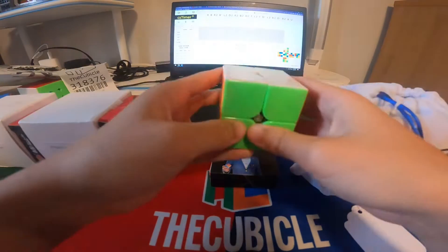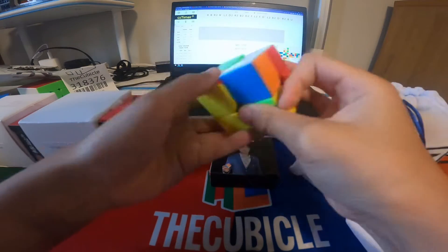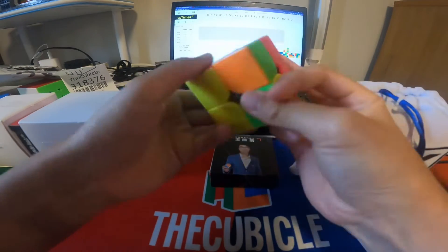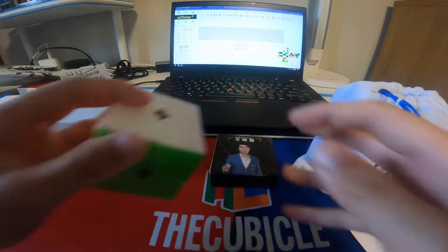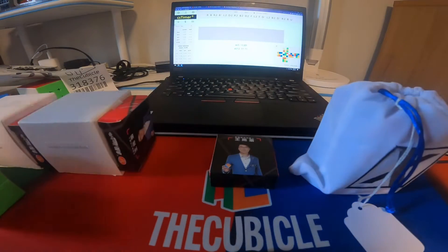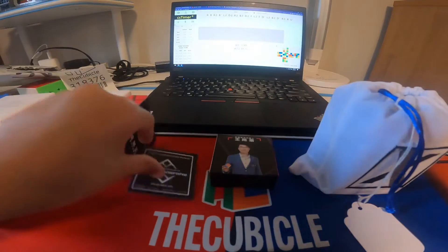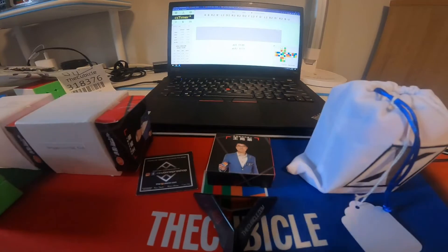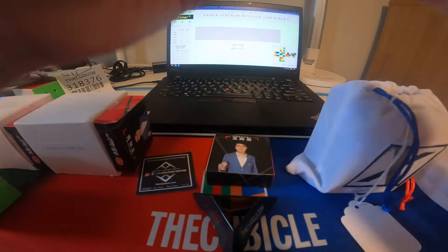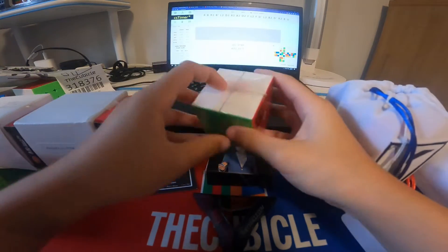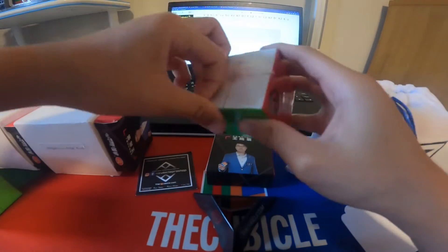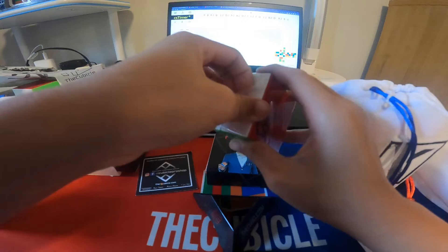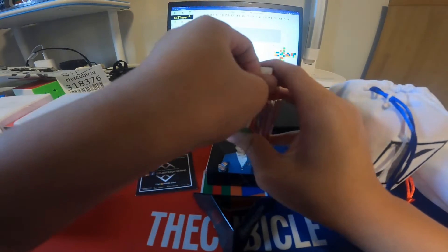I'm trying to get faster at 2x2, so this is my current main, the YJ MGC normal, but I got the Elite because I heard it's good. Here's a cube stand, and here's the cube itself. So this is my first Angstrom cube.